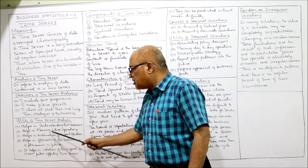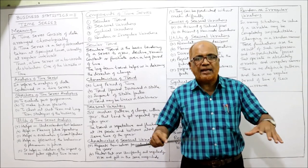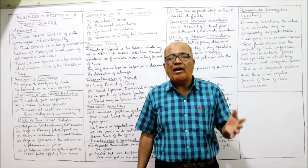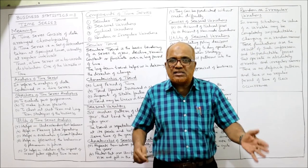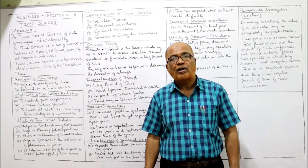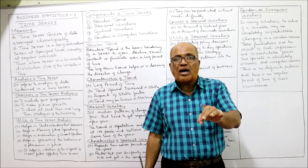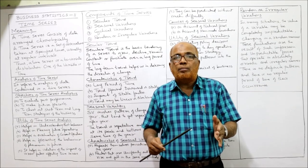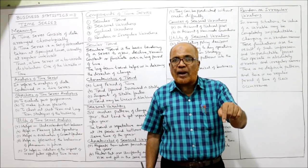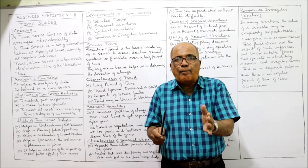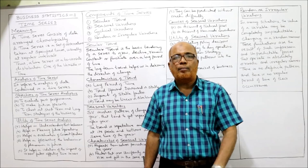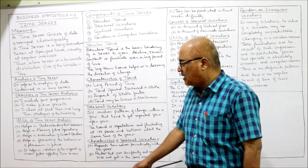The second utility is it helps in planning future operations. By undertaking time series analysis we can plan for the future. Without planning no business can run — every businessman has to make planning about the future. Third, it helps in evaluation of current operations — not only deciding about the future but also current operations can be evaluated. We can compare whether whatever we have planned, are we achieving it or not? That means it helps in controlling activities too.